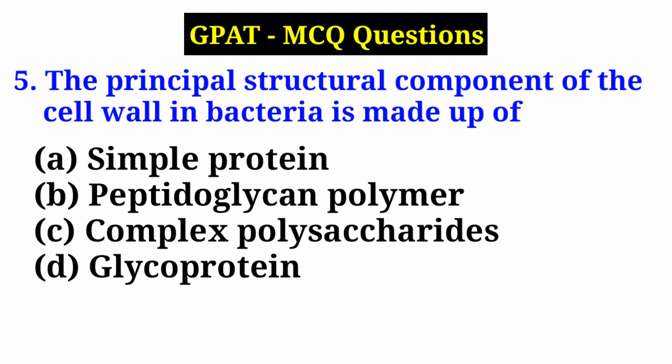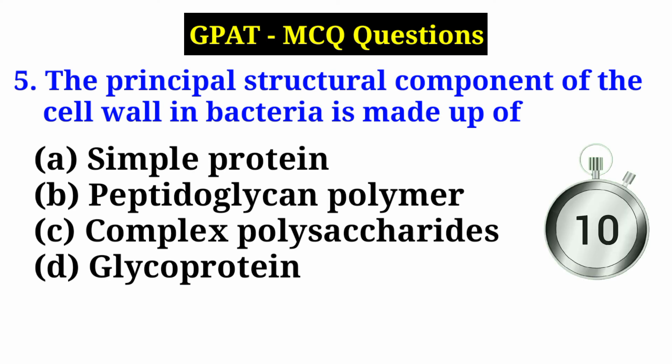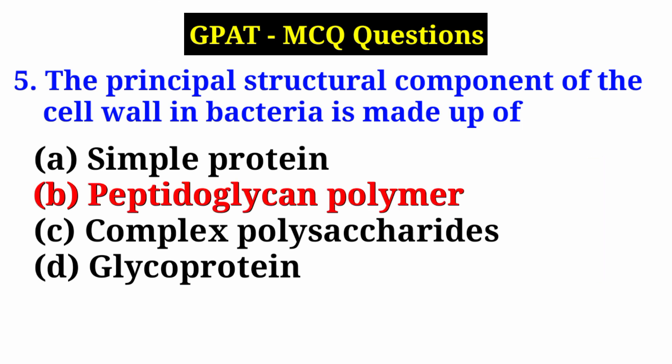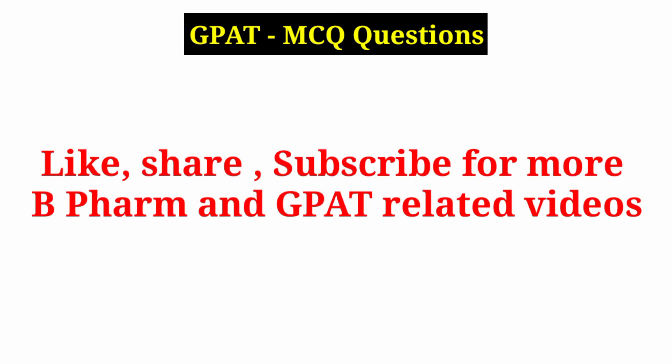Question 5: The principal structural component of the cell wall in bacteria is made up of — Option A: simple protein, Option B: peptidoglycan polymer, Option C: complex polysaccharides, Option D: glycoprotein. Answer is Option B — peptidoglycan polymer. The bacterial cell wall is made up of peptidoglycan polymer. Like, share, and subscribe for more B.Pharm and GPAT related videos.